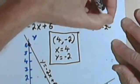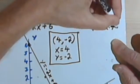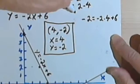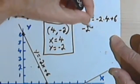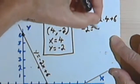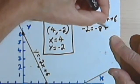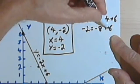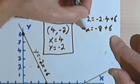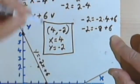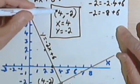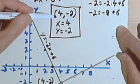Negative 2 equals negative 2 times 4 is negative 8, plus 6. Negative 8 plus 6 is the same as negative 2. So this equation checks also. So this answer is the correct one.